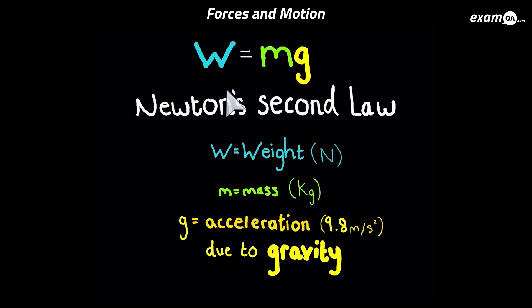In this video we're going to be looking at w equals mg. Now w equals mg is basically that same formula f equals ma, because w is the weight, and weight of course is a force. It's a force which acts downwards towards the earth, and it happens due to gravity.